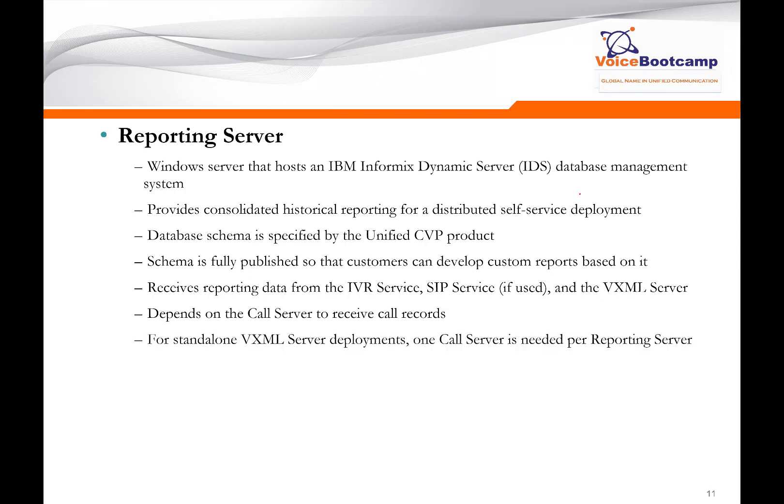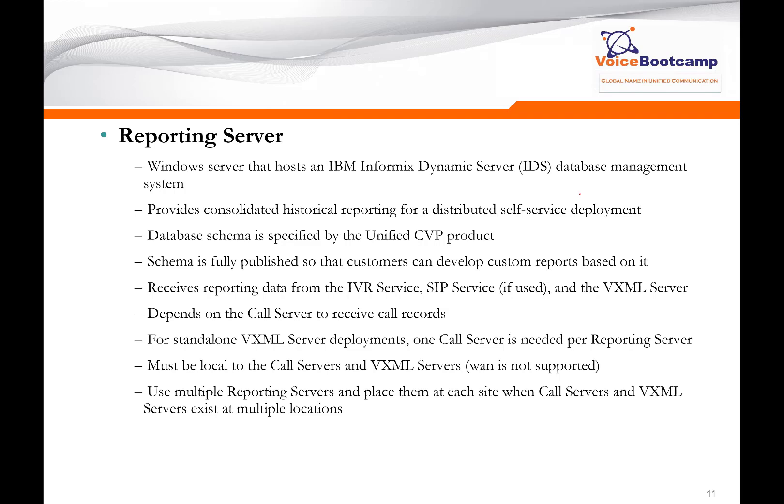In a standalone VXML server deployment — basically with no contact center enterprise involved — one call server is needed per reporting server. The VXML server and call server must be local because reporting server over the WAN is not supported. You can run multiple reporting servers, placing them at each site where call server and VXML server also exist at those locations. The reporting server does not perform any database administration maintenance activities such as backup or purging.